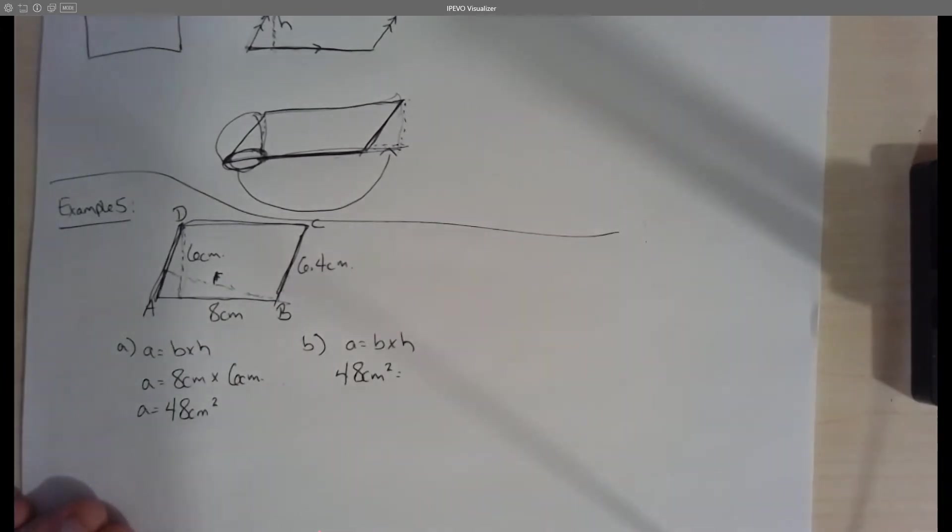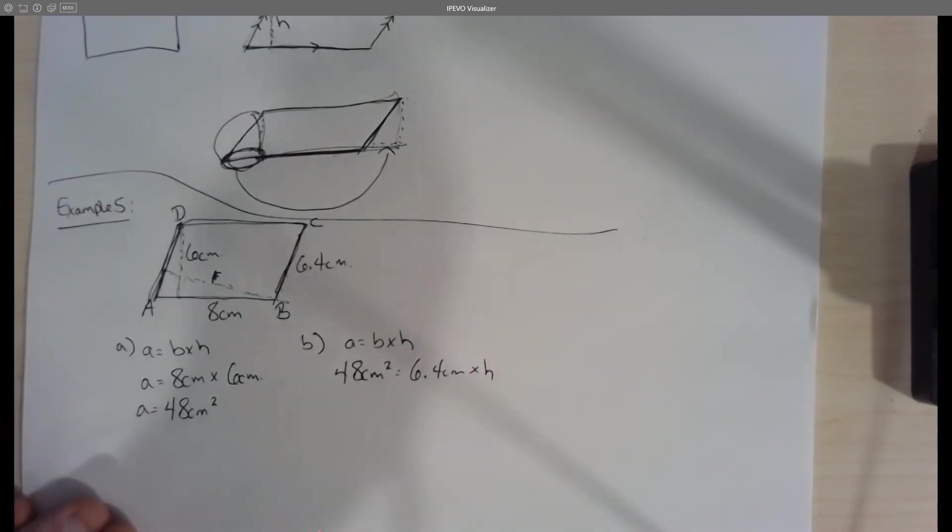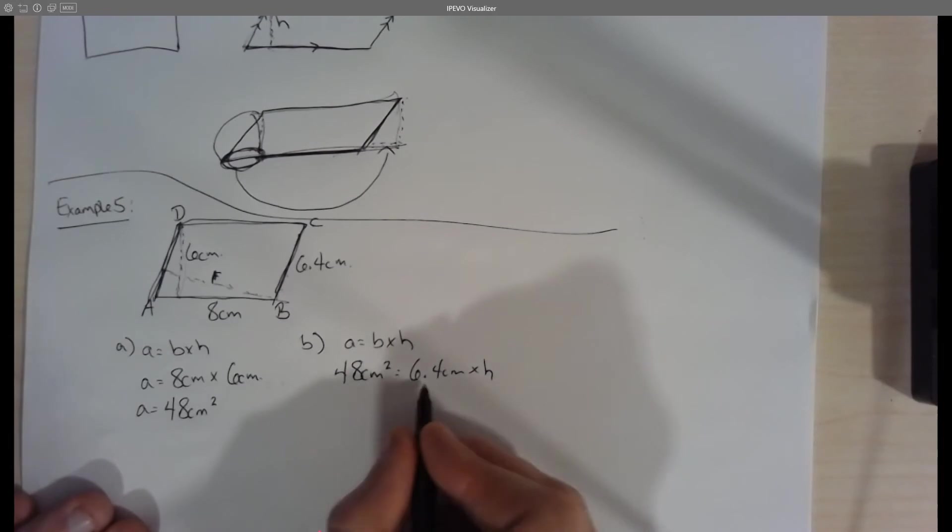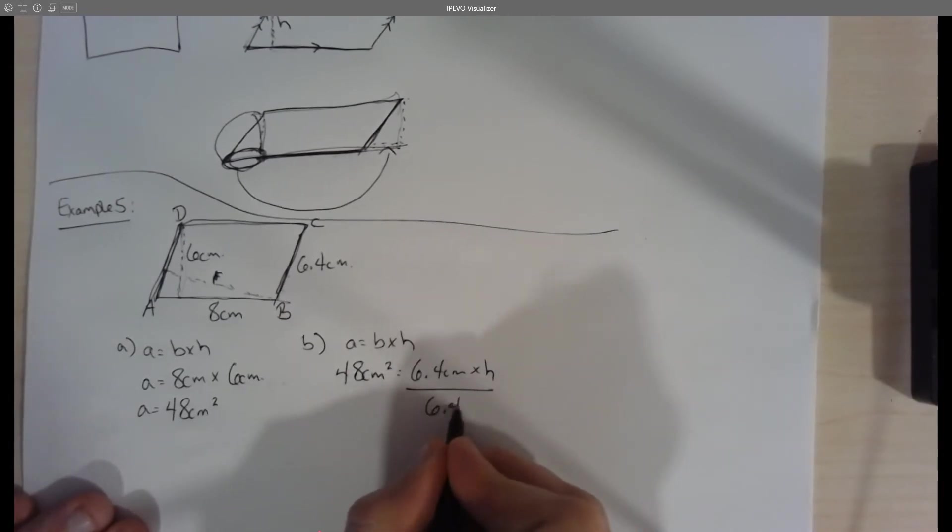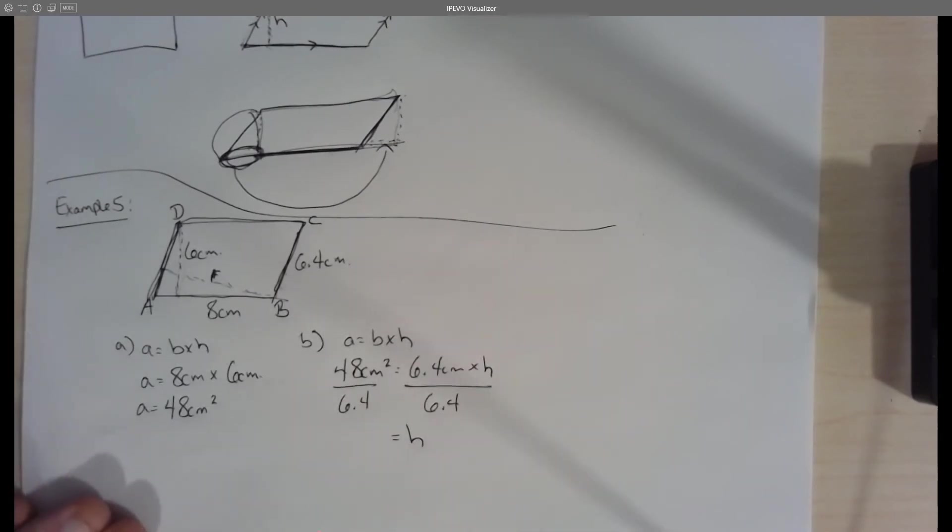We know our base is 6.4 centimeters. So this line here, that's our height that we're trying to figure out that we don't know. In order to do that, we need to get H by itself. And we do that by dividing both sides by 6.4, which when we do that, it gives us a final height of about 7.5 centimeters.